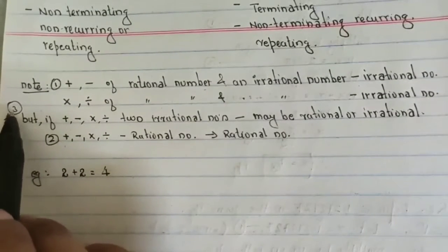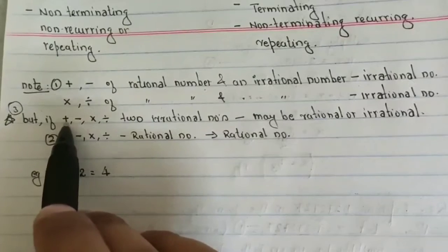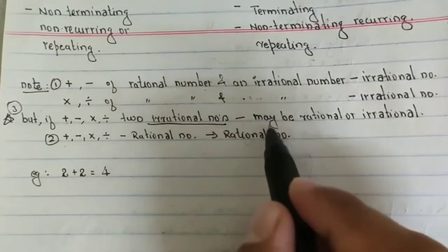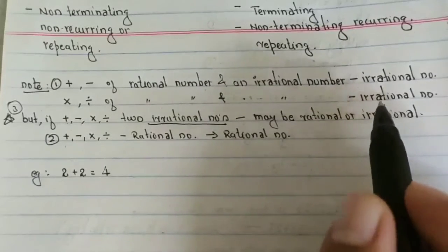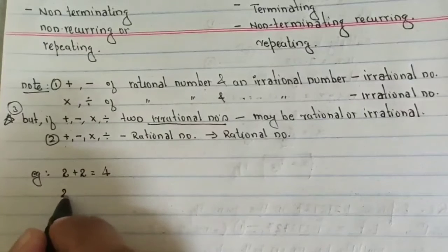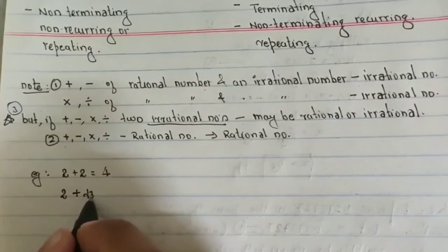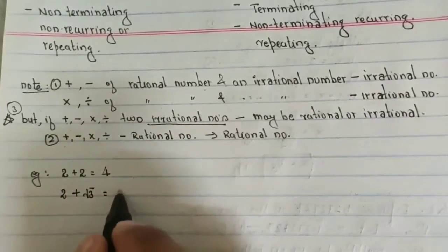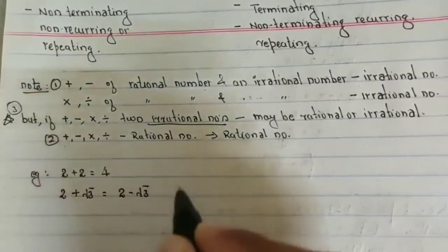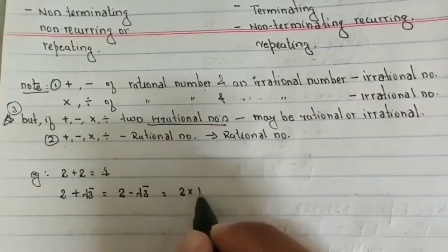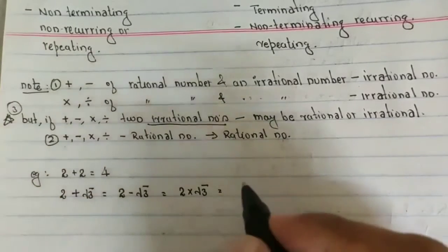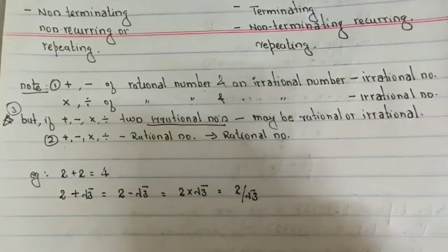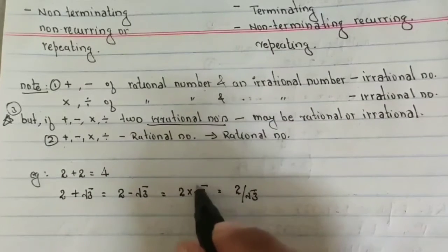Now the important third point: if you add, subtract, multiply, or divide two irrational numbers, you will get maybe a rational number or an irrational number. For example, 2 plus root 3 is irrational. 2 minus root 3 is also irrational. 2 into root 3 is also irrational. And 2 divided by root 3 is also irrational, because the root is present everywhere.